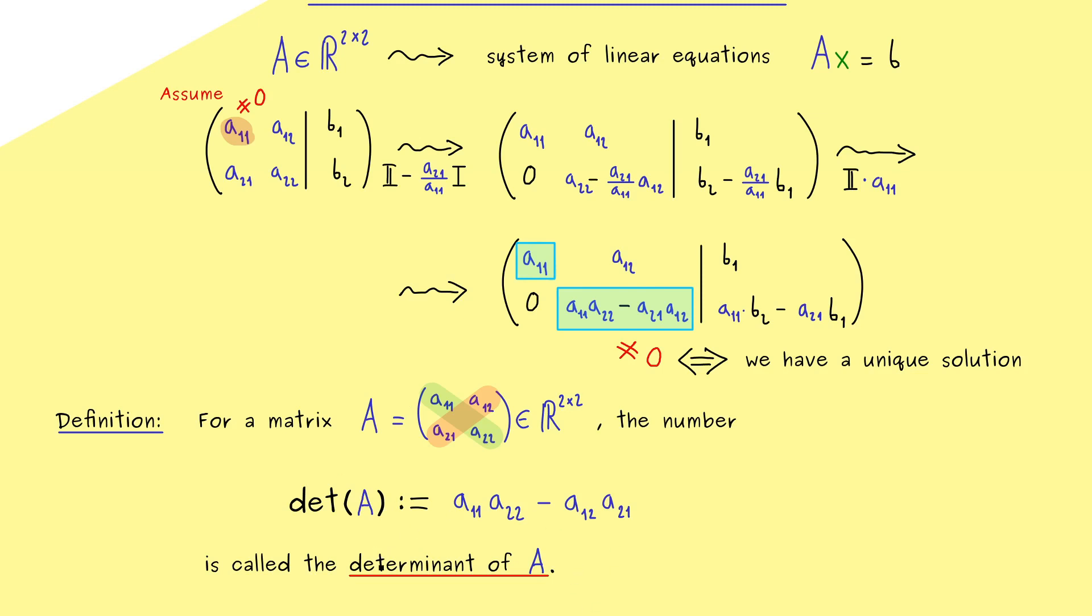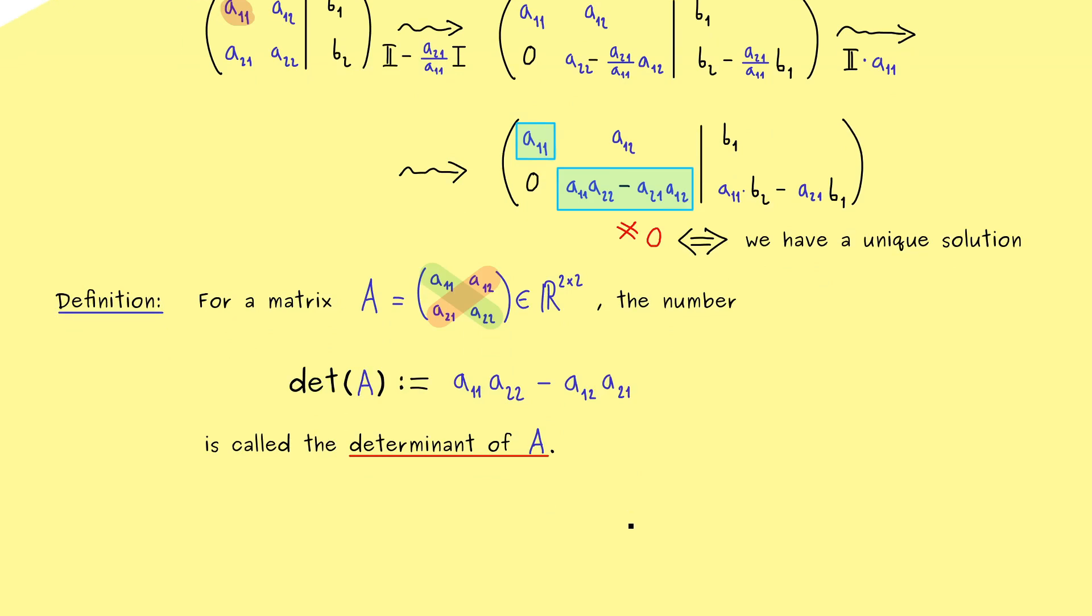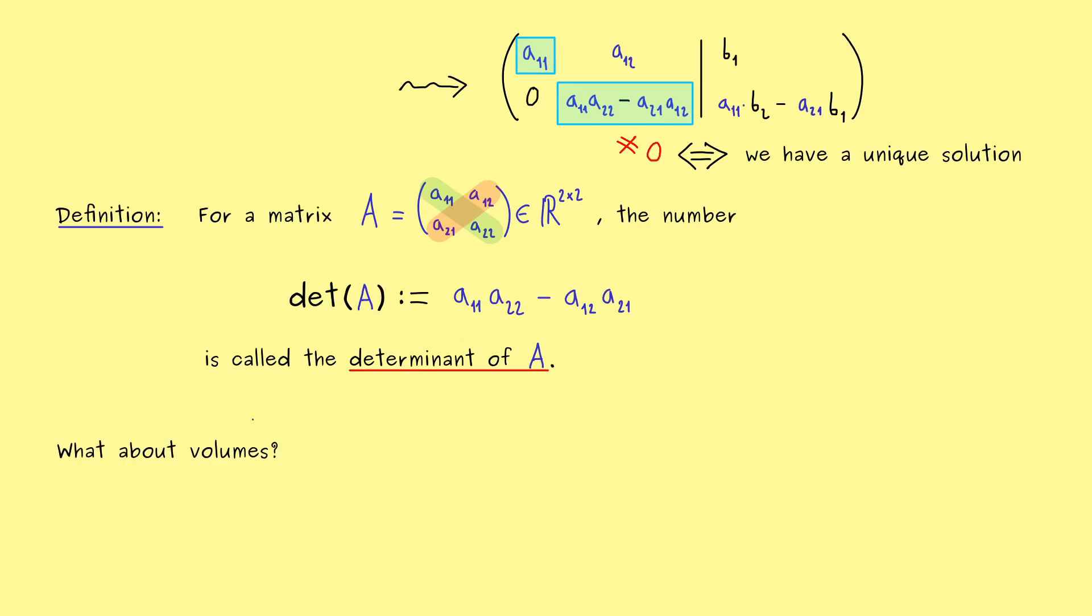Okay, and now you see the determinant of a matrix determines if a system of linear equations is uniquely solvable. You just have to check if the determinant is zero or not. So now we can remember the determinant helps for systems of linear equations. But we already know the determinant can do much more, namely as we have discussed it in the last video.